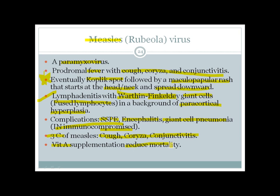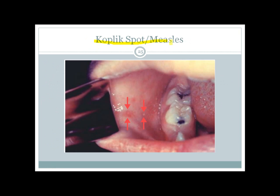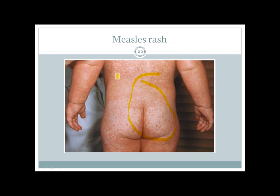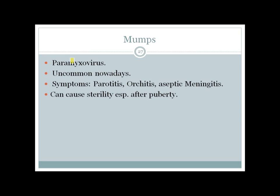Koplik spots appear in the prodromal stage of measles — whitish-blue areas surrounded by an erythematous region present on the buccal surface. These are followed later by a maculopapular rash which starts from the upper part of the body, especially the head and face, and then spreads to the lower parts of the body.